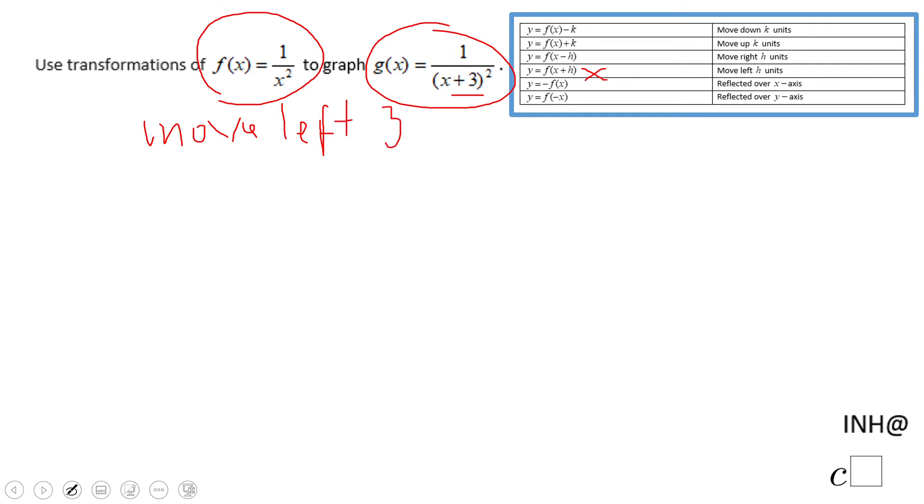So g of x is the same as f of x, just moved left three units. That's the transformation. Now let's take a look at a little bit of graphs.